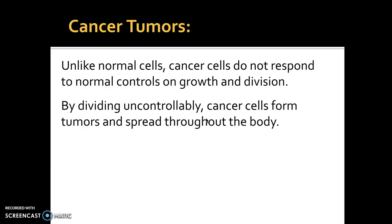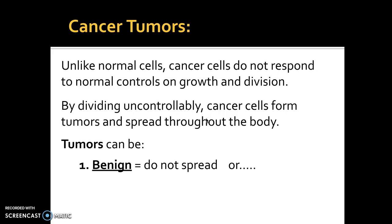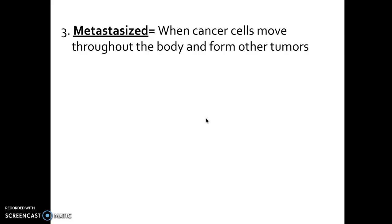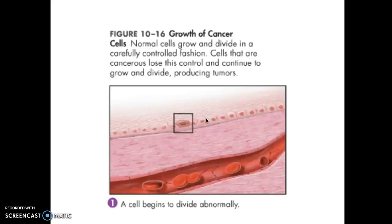Unlike normal cells, cancer cells do not respond to the normal controls of growth and division, so by dividing uncontrollably, cancer cells form tumors and can spread throughout the body. There are a couple of key terms to know: benign means the tumor has not spread — best case scenario when visiting the doctor. Unfortunately, tumors can also be malignant, meaning they can invade and destroy surrounding tissue. The other term is metastasis — when cancer cells move throughout the body to form other tumors, meaning the cancer has spread and started forming new tumors in other parts of the body.